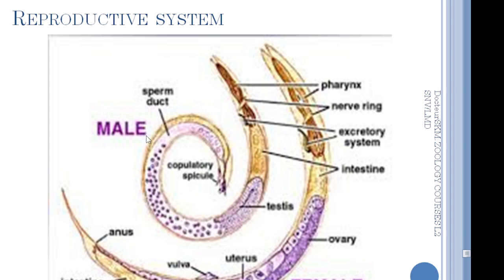For the male, it contains only one testis and only one spermaduct. The spermaduct finishes at the genital pore, which is composed of a penis containing copulatory spicules. You can see in the picture the difference between the male and the female.